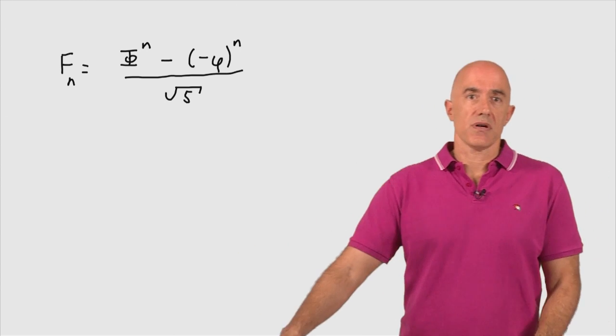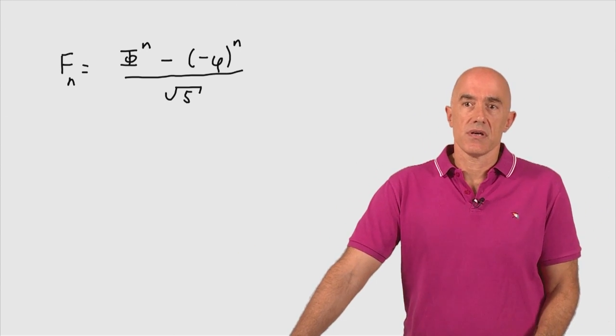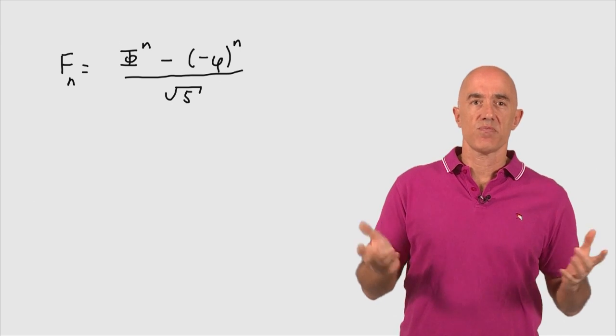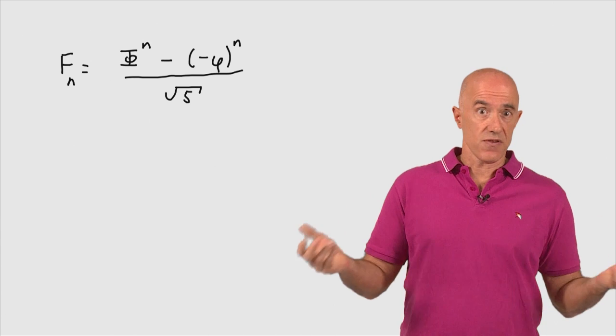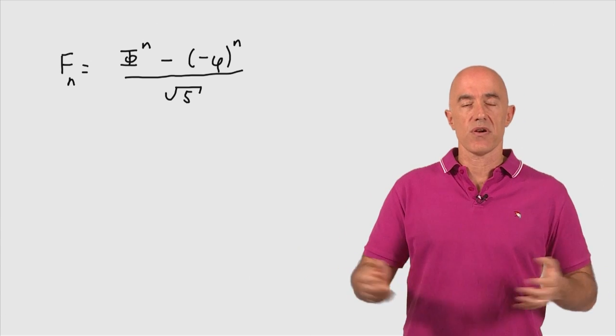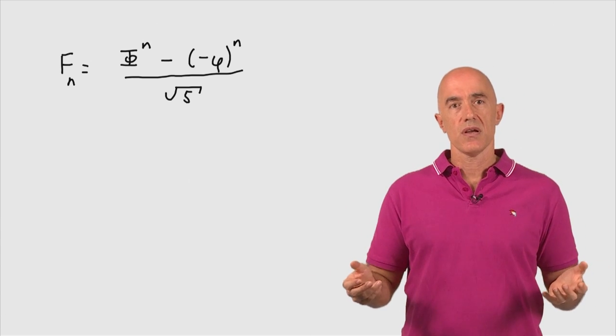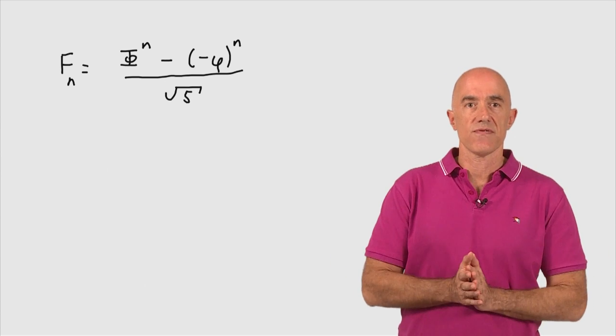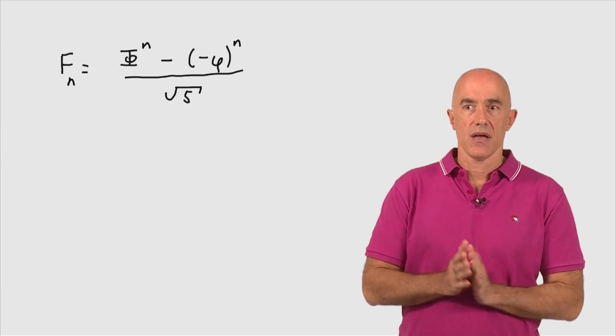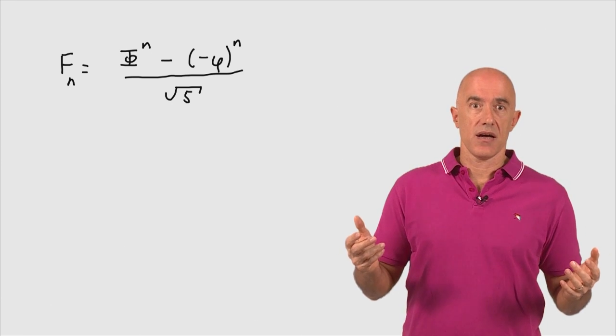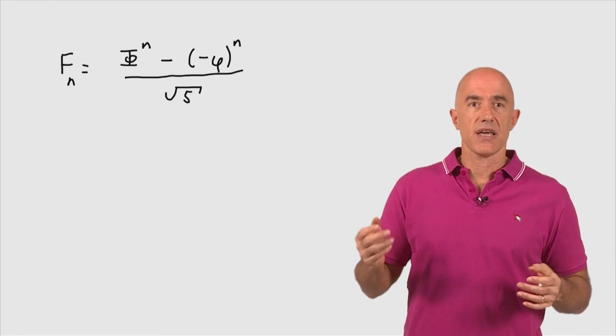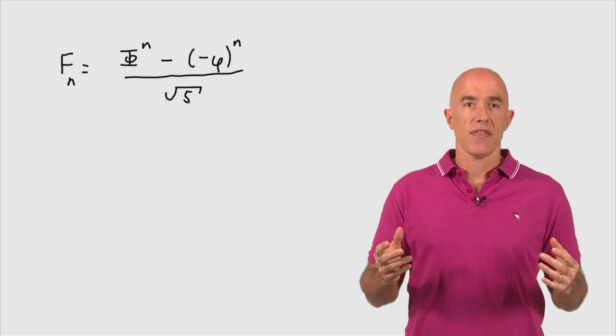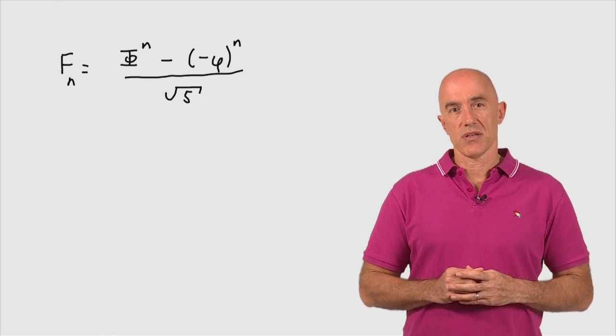A remarkable formula. The nth Fibonacci number is given by this expression. Both big phi and little phi are irrational numbers. Square root of 5 is an irrational number. But when we do the subtraction and the division we get an integer which is the Fibonacci numbers. You can try it out at home. You can use a calculator and convince yourself that indeed you do get Fibonacci numbers.